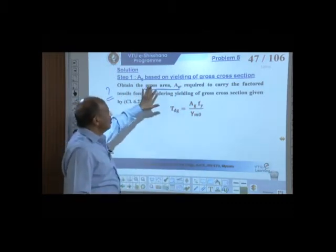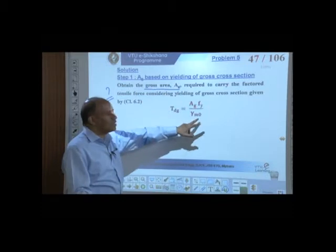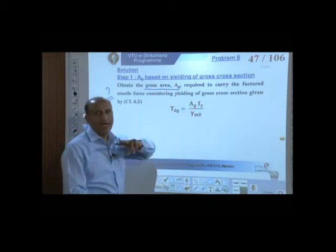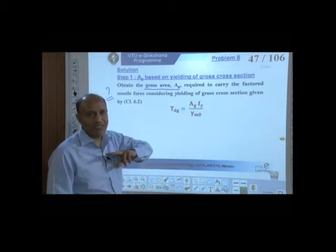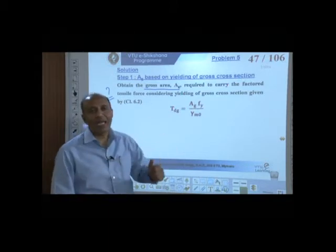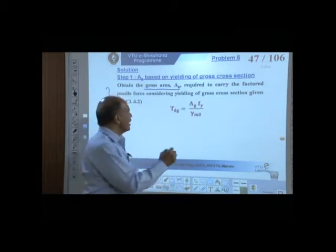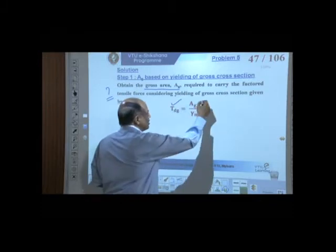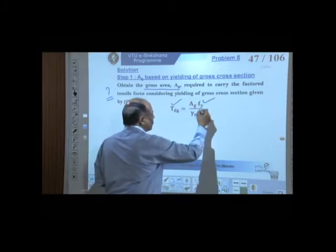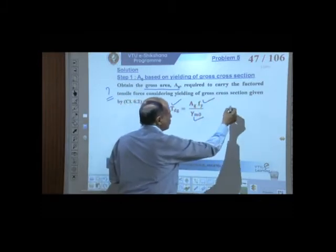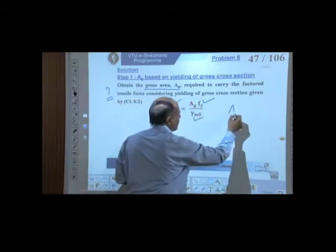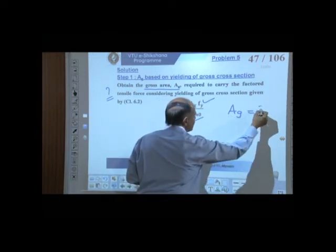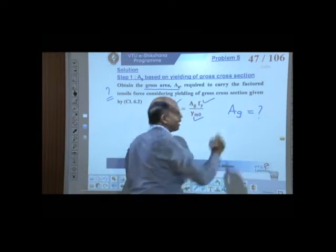Starting with Criteria 1 — yielding of gross cross section — we calculate Ag. The factored load is given (210 kN), fy = 250 MPa, and γM0 = 1.10. We directly substitute to calculate Ag. In the previous problem, Ag was given and we calculated TDG; here it is the reverse process.